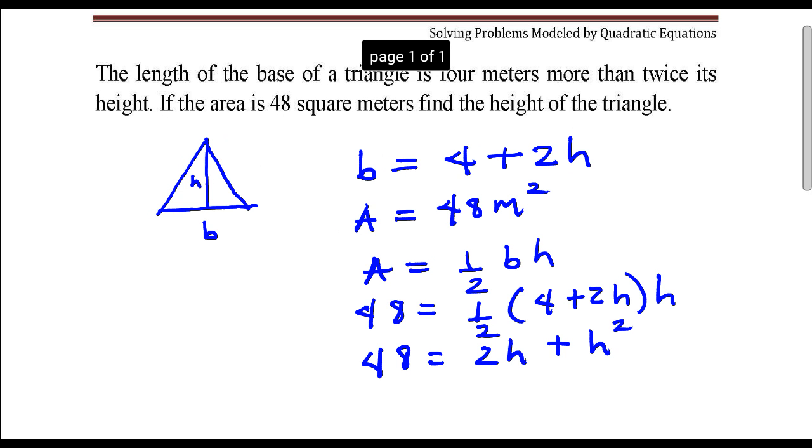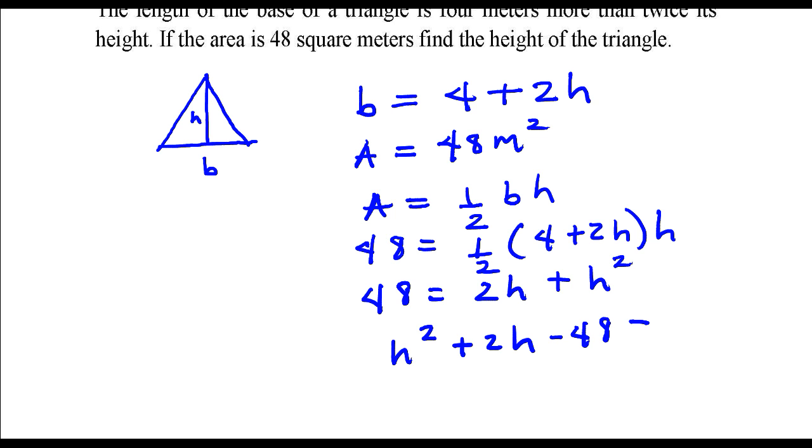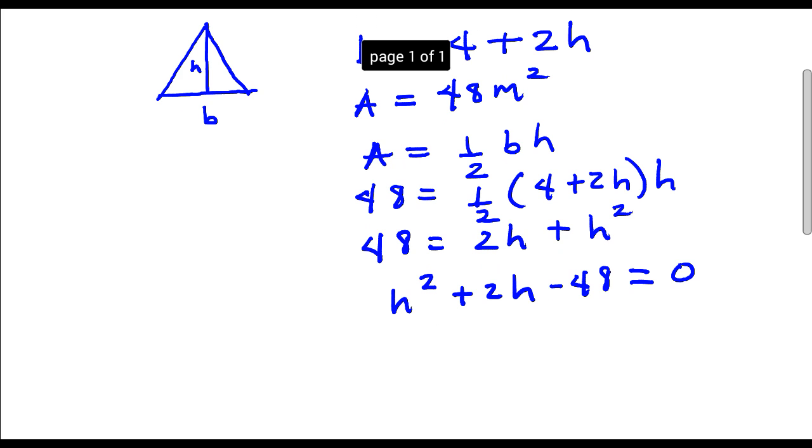Now I'm going to write this equation so that we have all the terms on one side and a 0 on the other side. So H squared plus 2H minus 48 is 0. I'm going to solve this quadratic by factoring.